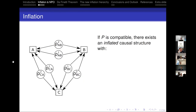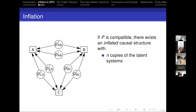We return to the triangle scenario. What we do is copy each of the latent systems. In the picture, each latent system has been copied once — we have ρ_AB1 and ρ_AB2, and similarly copies of ρ_BC and ρ_CA. In general you can do this n times, getting n copies of the latent systems. Now each of Alice, Bob, and Charlie has a choice of which of these copies to measure. For example, Alice can choose ρ_CA1 coming in from the left and ρ_AB2 coming in from the right. There are n² copies of the POVMs, one for every choice of states coming in.